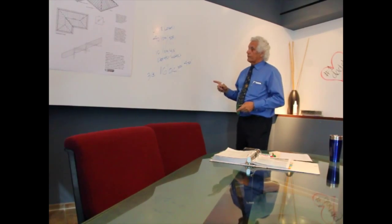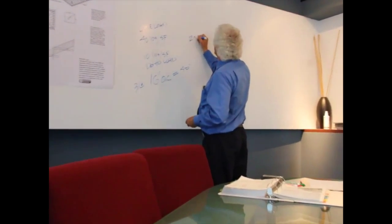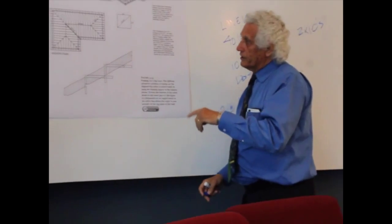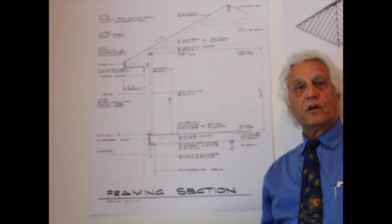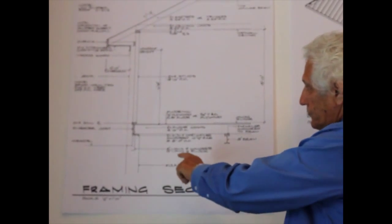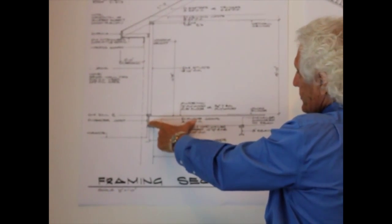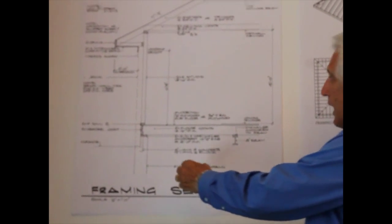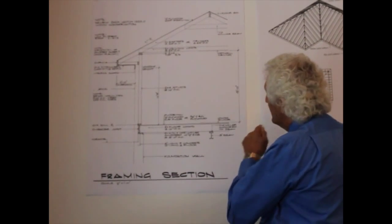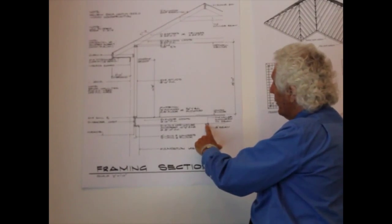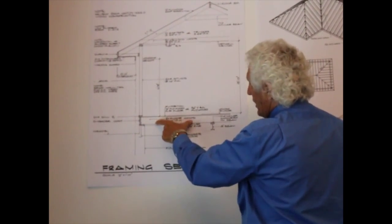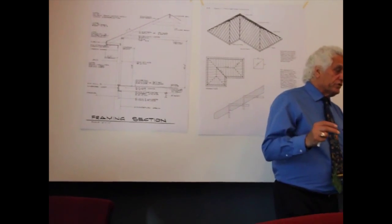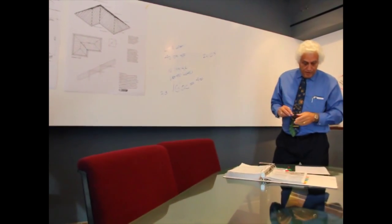Whether it's two-by-tens, two-by-twelves, the standard spacing is 16 inches on center. That's derived from the four-foot module used in construction — three spaces of 16 inches equal four feet — which is why sheet goods are four feet by eight feet. As spans get larger, we look at alternate framing members. Standard floor joists like two-by-tens have a span limit of roughly 12 feet from outside wall to center beam.